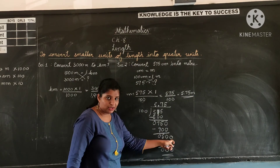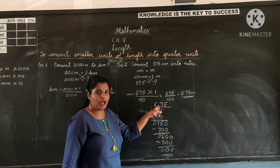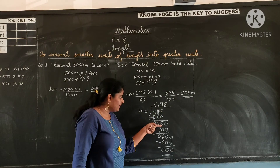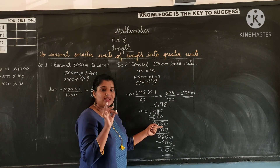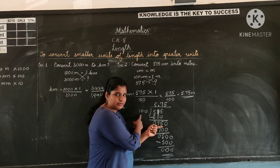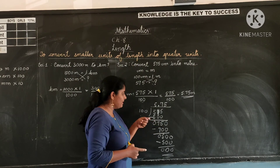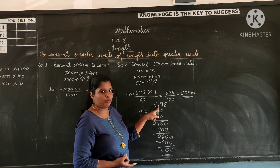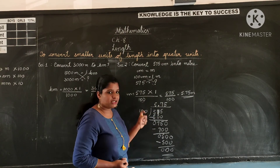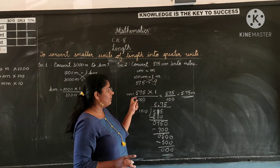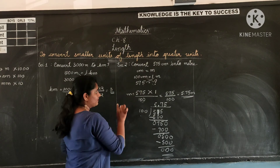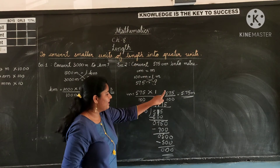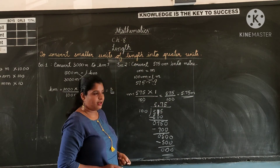Why did we add a zero there? Because we had already added a decimal point. Why did we add a decimal point? We added the decimal point because the number we got, 75, was less than the divisor, 100. To make the number divisible by 100, we had to add a zero, and in order to add that zero, we had to put a decimal point. So, to convert centimeters into meters, we divided the number by 100.